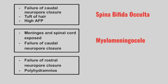The next one is a failure of rostral neuropore closure and they have polyhydramnios. This is anencephaly. The reason they have polyhydramnios is because they don't have a well-developed swallowing center.